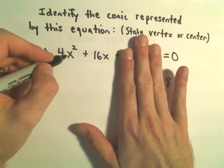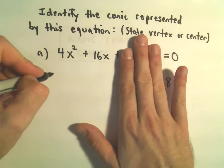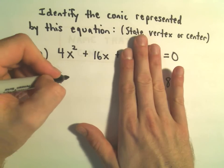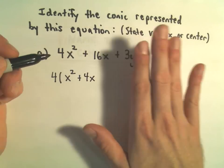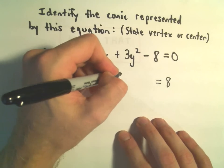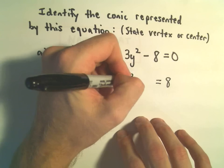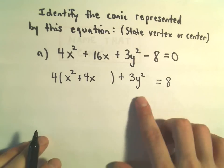For my x squared, my 4x squared plus 16x, I'm going to factor out the coefficient of 4. So then I would be left with x squared plus 4x inside my parentheses. We've got our 3y squared. I'm just going to leave that part alone.